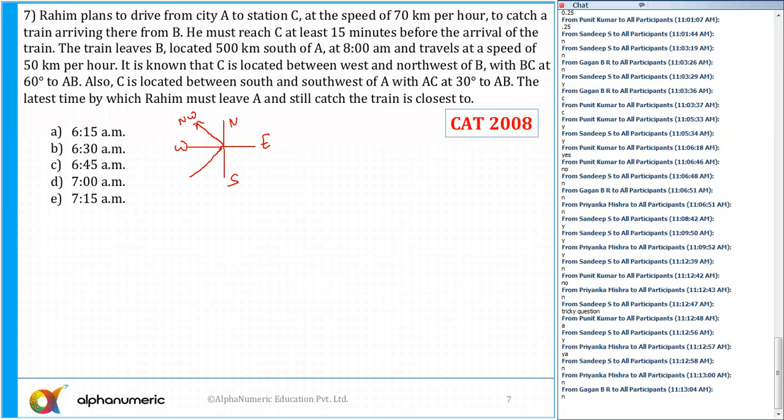Drawing the figure is very important. There are three points: A, B, and C. C is located between west and northwest, with BC at 60 degrees to AB. So this angle is 60 degrees. And AC is making an angle of 30 degrees to AB. So this angle is equal to 30 degrees, which means angle C must be equal to 90 degrees.